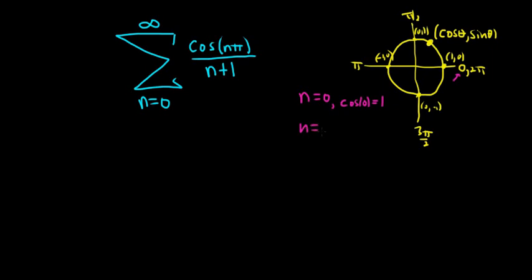When n is equal to 1, we get 1 pi, so we just get pi. In this case, we get negative 1, right, because here the x coordinate is negative 1.